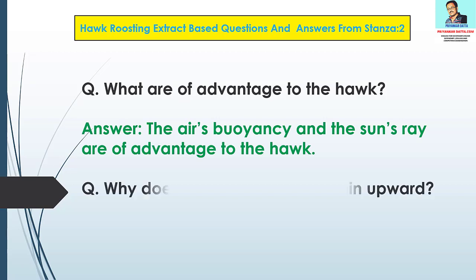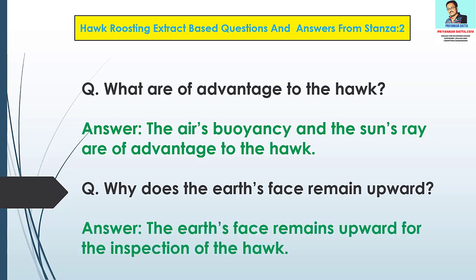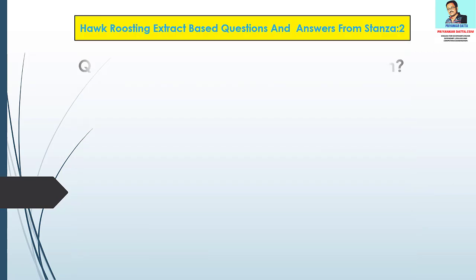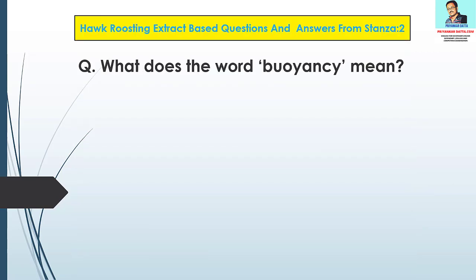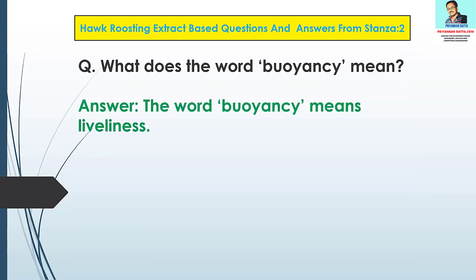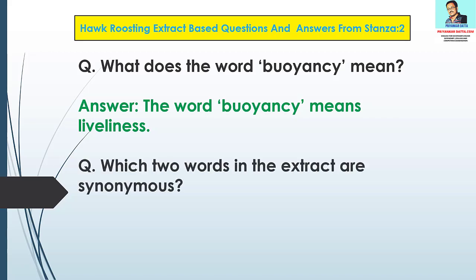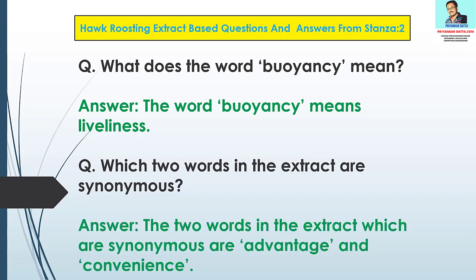Question 2: Why does the earth's face remain upward? Answer: The earth's face remains upward for the inspection of the hawk. Question 3: What does the word buoyancy mean? Answer: The word buoyancy means liveliness. Question 4: Which two words in the extract are synonymous? Answer: The two words in the extract which are synonymous are advantage and convenience.